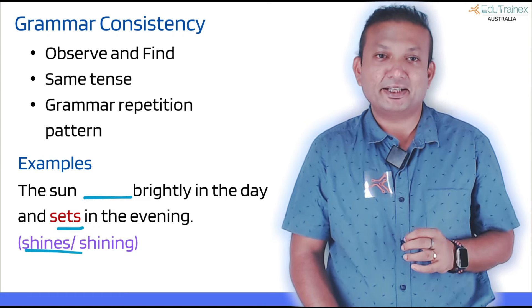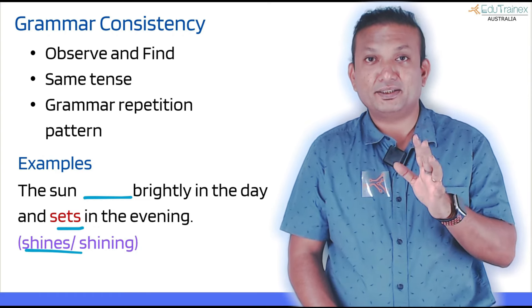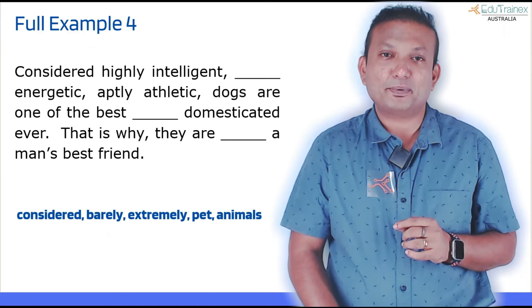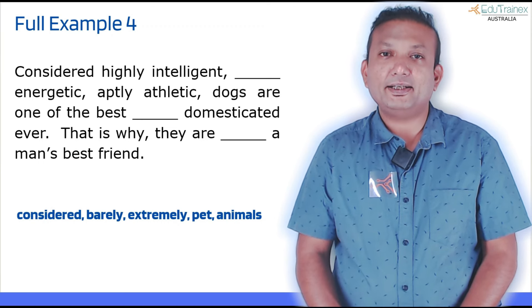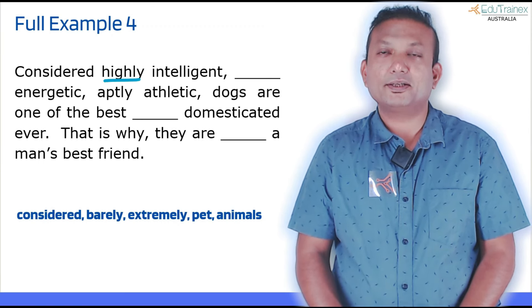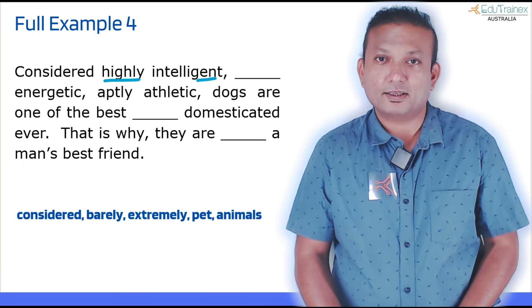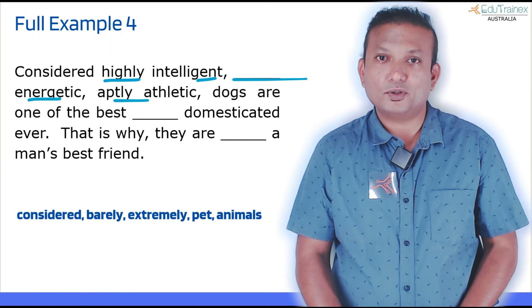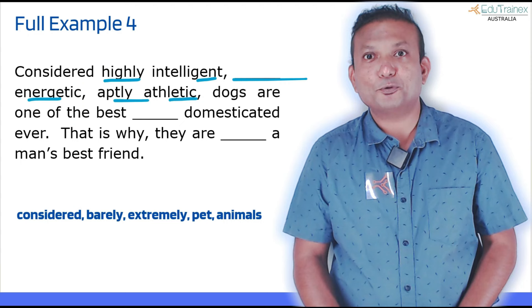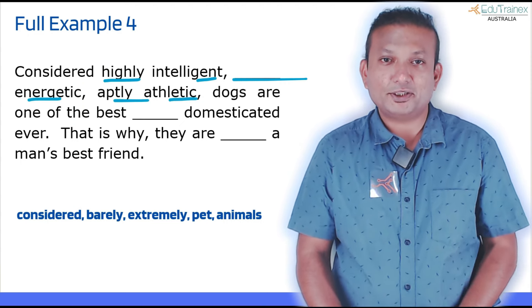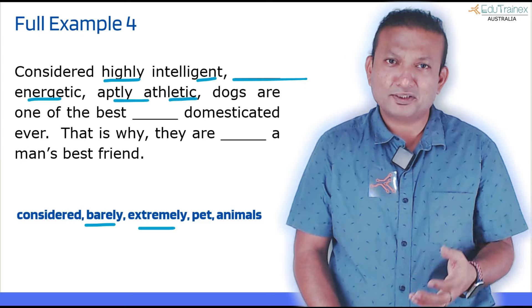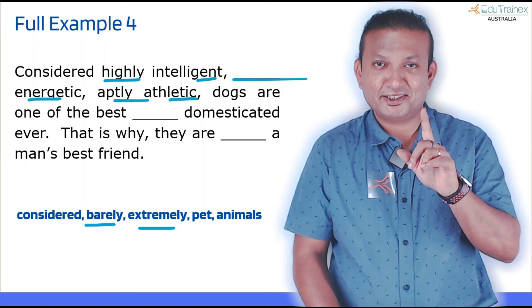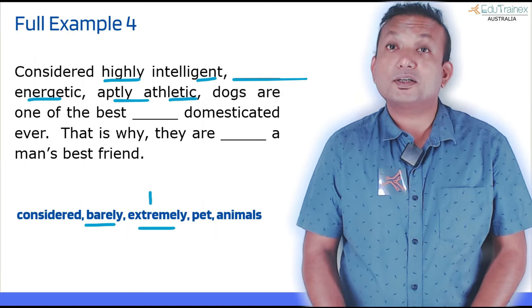And there will be a lot of patterns, trust me, in the exam that you need to identify. Let's look at the next example and then I will show you what I mean by grammar pattern. See this example: 'Considered highly intelligent.' Highly, you already know it's an adverb. Intelligent, this time is adjective. Blank energetic. Again, adjective. Aptly aesthetic. Aptly, again adverb. Aesthetic, again adjective. So what are we looking for here? We are looking for an adverb. Let's see how many adverbs: 'barely' and 'extremely.' Now apply common sense, context. Simple. 'Considered highly intelligent, barely energetic?' No. 'Extremely energetic?' Yes. So that will be your first answer.